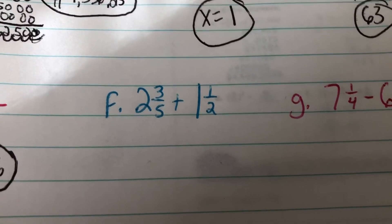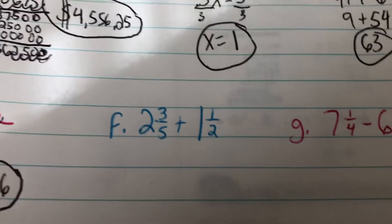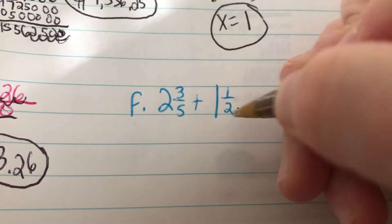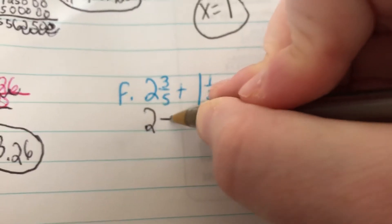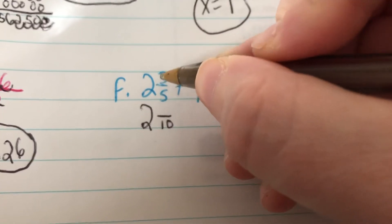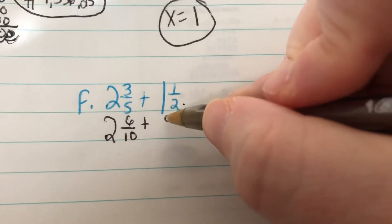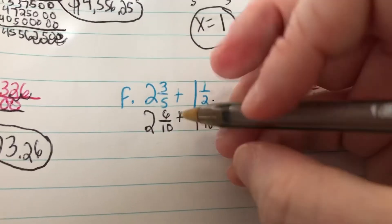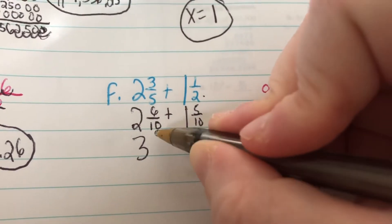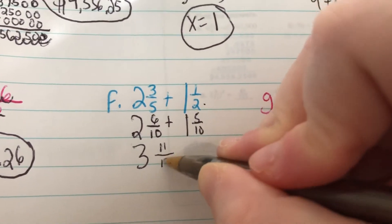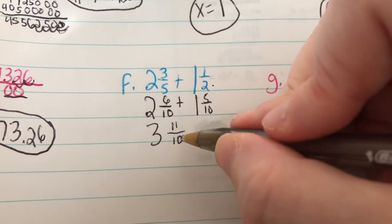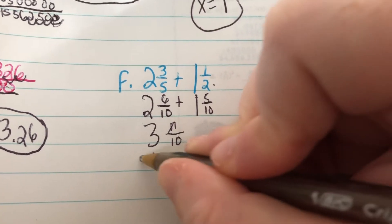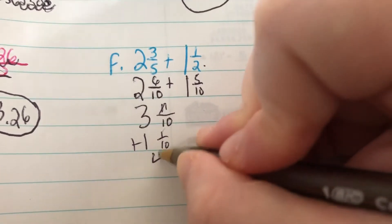If we have 2 and 3 fifths plus 1 and 1 half, we have to make those fractions have the same denominator. So the first number that both 5 and 2 go into is 10. So 2 and 3 fifths is 2 and 6 tenths. I had to times that 5 by 2, so I've got to times that 3 by 2, which would be 6. And then 1 and 5 tenths. I had to times that 2 by 5. So then I'm adding my whole numbers. I'd get 3. 6 tenths plus 5 tenths would be 11 tenths. That is not simplified. 10 goes into 11 one time. So I'd add 1 to that and then I'd have 1 tenth. And my answer would be 4 and 1 tenth.